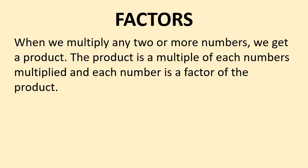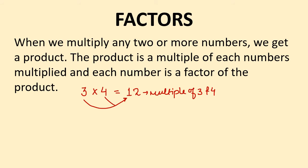When we multiply two numbers like 3 multiplied by 4, the product obtained, i.e. 12, is the multiple of 3 and 4 also. In this product, we can see that 3 divides 12 completely. Similarly, 4 also divides 12 completely. When we divide 12 by 3 or by 4, the remainder is equal to 0. So here, 3 and 4 are the factors of 12.